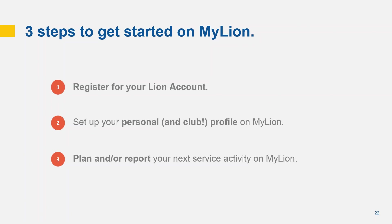So what's next? There are three key things we can all do to get started on MyLion and to help our members start using MyLion. First, create a Lion account. If you've created an account already, you can also make sure that every club member's information in MyLCI is up to date. Members will be able to register for a Lion account if they have an updated email or mobile phone number on record. Next, set up your personal and club profile in MyLion — add an image, write a description, and start making MyLion personal to you. And finally, plan and/or report your next service activity on MyLion. One of the best ways to learn the application is to try using it. MyLion will become our service activity reporting destination starting July 1, 2019. So rather than entering your next activity in MyLCI, give MyLion a try.